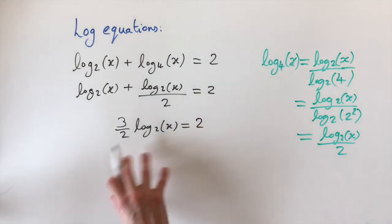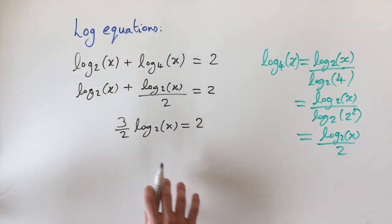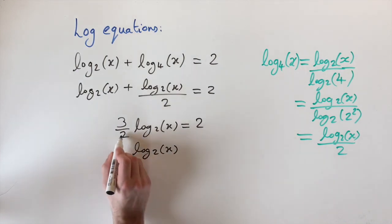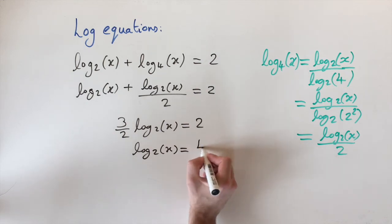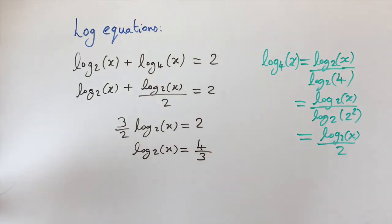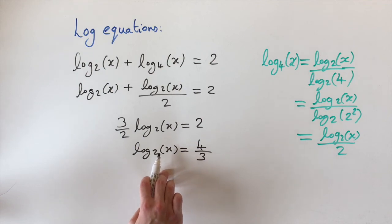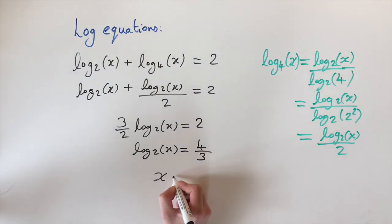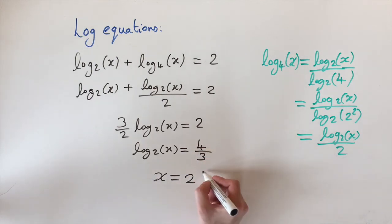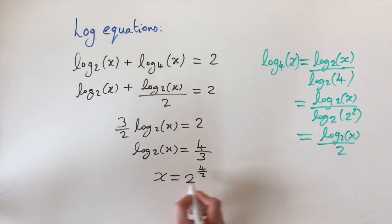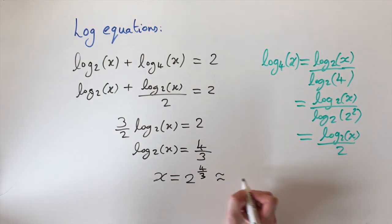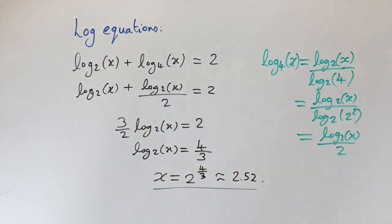This is a linear equation, not a quadratic. Solving for the logarithm: multiply both sides by 2 and divide by 3, giving log base 2 of x equals 4/3. Applying the inverse of the logarithm, x equals 2 to the power of 4/3, which evaluates to approximately 2.52. This is the only solution to this logarithmic equation.